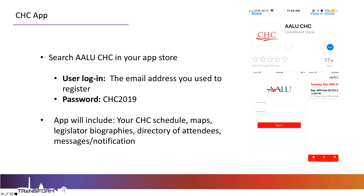The app will have your schedule in it, which is the most crucial part. That is going to be updated in real time, so you can keep track and make sure your meetings are at the times you saw previously, and get notified of any changes. You will want to enable push notifications when you download the app so you can get the most up-to-date information. The login for the CHC app is the email address you used to register for CHC and Transform, and your password is all caps CHC 2019. In addition to your schedule, the app will also include maps, legislator biographies, a directory of attendees, and messages and notifications.